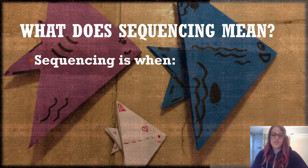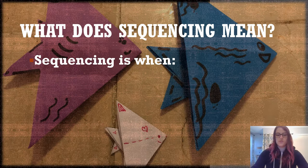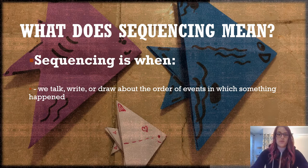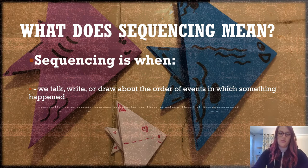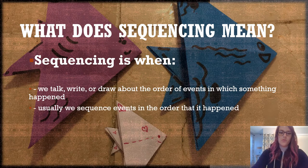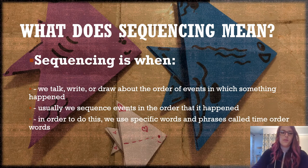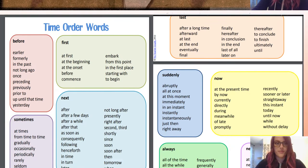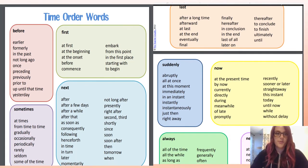What does sequencing mean? Sequencing is when we talk, write, or draw about the order of events in which something has happened. Usually we sequence events in the exact order that they happened. To do this, we use specific words and phrases called time order words or sequence words.